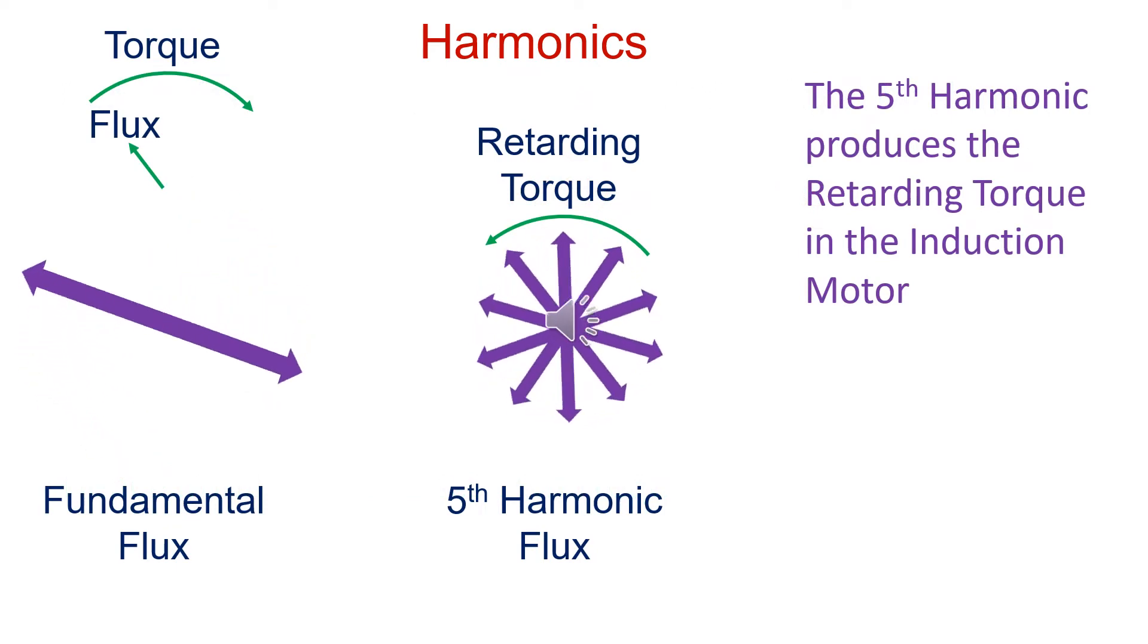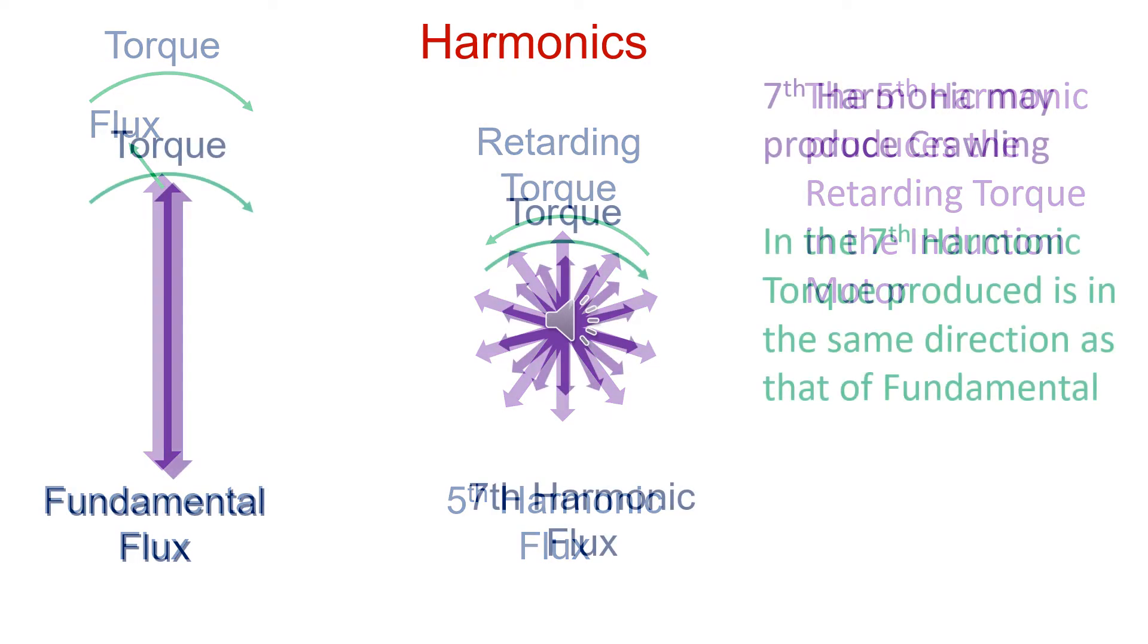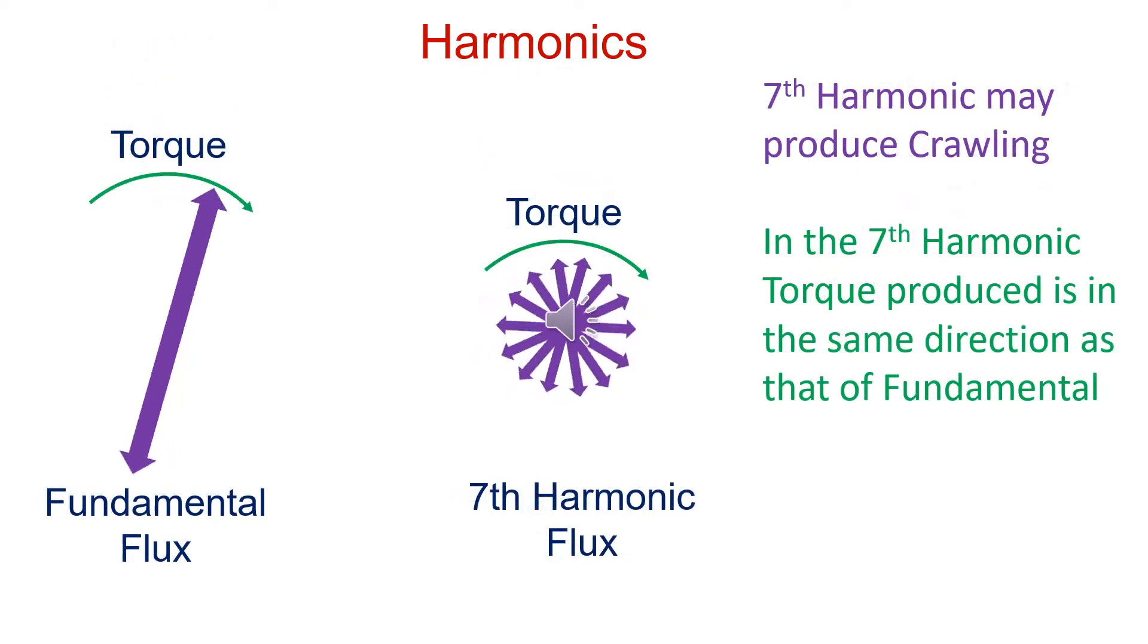The fifth harmonic produces retarding torque in the motor. The seventh harmonic may produce crawling.